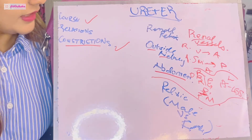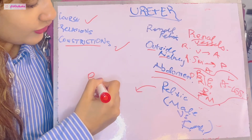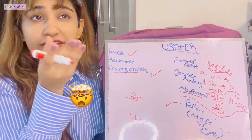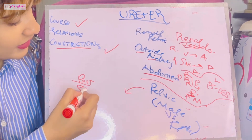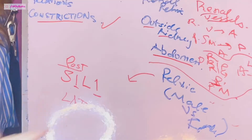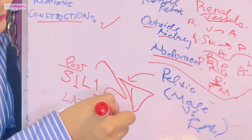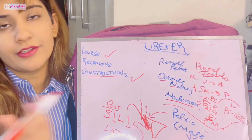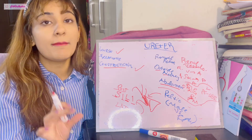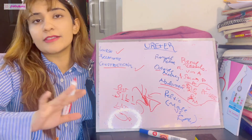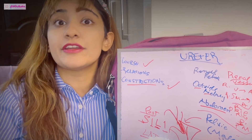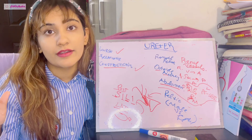In the pelvic part, focus on the posterior and lateral relations. For posterior relations, remember SILL: S for sacroiliac joint, I for internal iliac artery, I again for internal iliac vein, L for lumbosacral trunk. Laterally, all relations are obturator-related — obturator nerve, obturator vein, obturator artery, and obturator internus with its covering fascia. That covers the pelvic posterior and lateral relations.